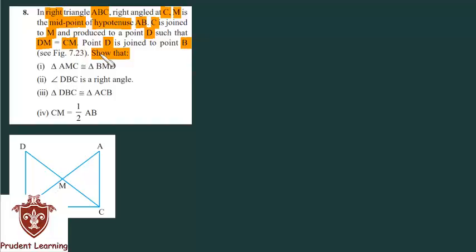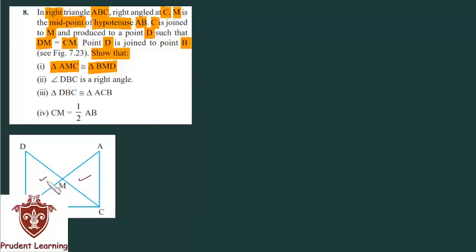First section: we have to show that triangle AMC is congruent with triangle BMD. Let us look at both triangles carefully. Triangle AMC and triangle BMD — these two are congruent, and this is what we have to prove.